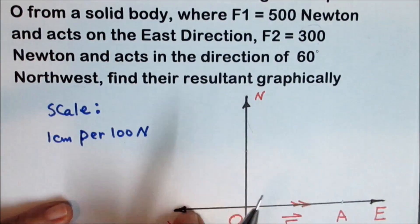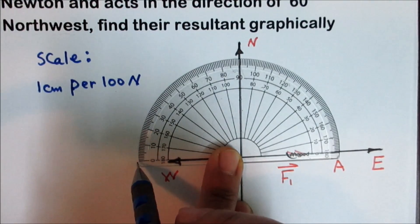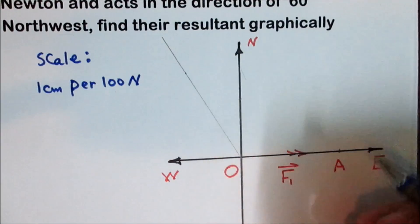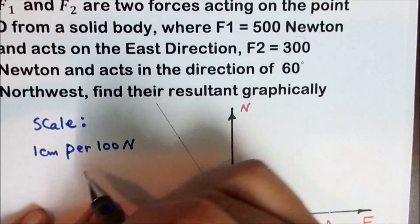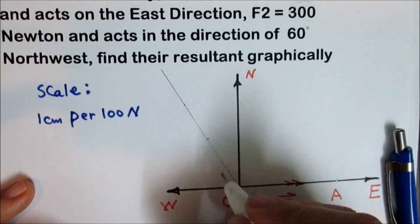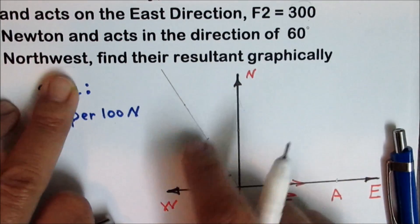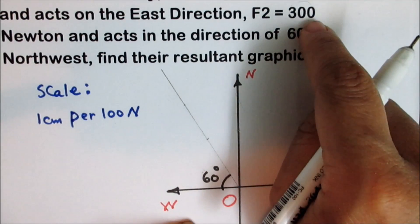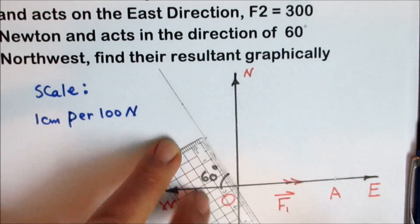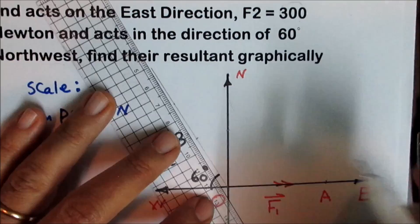For the northwest direction, we start from the west direction. Use the protractor, placing its center at the origin point O and starting from the west side to measure 60 degrees toward the north. Draw the ray OB along this angle. The force is 300 newtons, so divide by 100 to get 3 centimeters on the graph. Plot 3 centimeters along this ray to get point B. The vector OB represents the force F2 at 300 newtons, 60 degrees northwest.